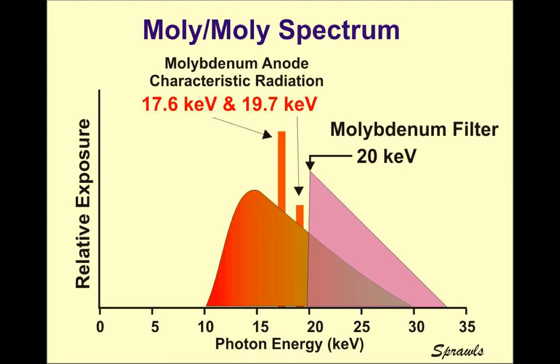You might ask why the characteristic X-rays coming from the target are lower energy. The reason is they're generated through the same process — an electron ejects a 20 keV K-shell electron, and the photon generated is the difference between those shells, resulting in either 17.6 keV or 19.7 keV. We're going to compare different combinations of targets and filters used in mammography, and hopefully it will click and make sense.